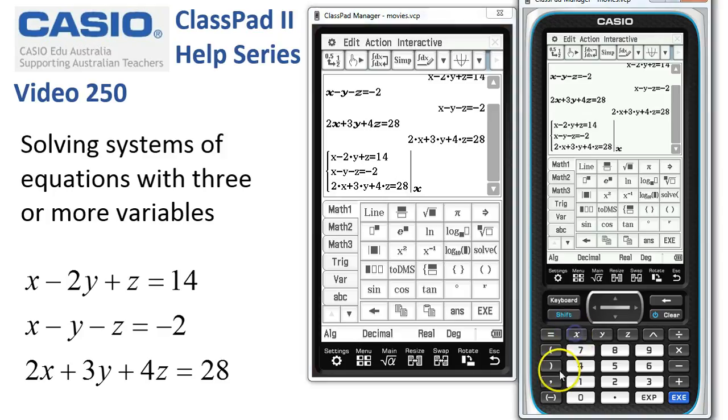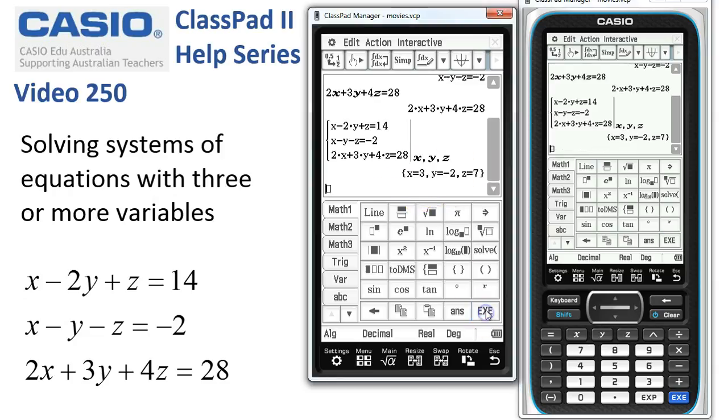We need to solve it for the variables X, Y and Z. No particular rhyme or reason for the order of these. It doesn't matter. We just tap execute and we've got ourselves a solution.